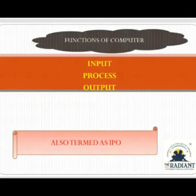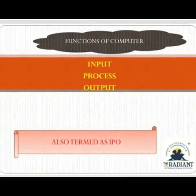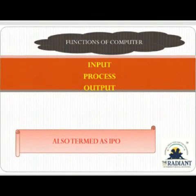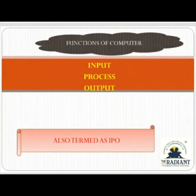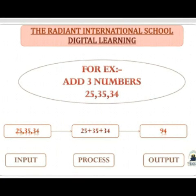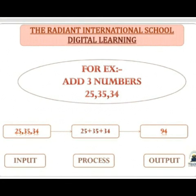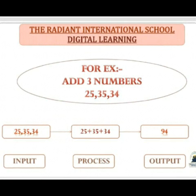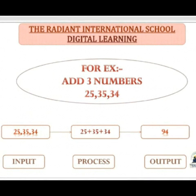Now the next topic is function of a computer. First: input — that is, the data we enter. Then process — what happens to the data we entered? Processing happens. And output — what we receive after the data is processed, that is our output. For example, add three numbers: 25, 35, and 34. Entering these three numbers is our input. Then these three numbers will be processed. After processing, the result we get — the number 94 — that is our output.